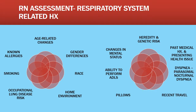For the RN assessment of the respiratory system and the patient's related history, you're going to look at age-related changes, gender differences, the patient's race, the home environment, occupational lung disease risk, smoking, known allergies, heredity and genetic risk, and past medical history of the presenting illness. Ask the patient if they have any dyspnea, if they have recently traveled, if they need more pillows than normal to breathe when they sleep. You're also going to ask the patient about their ability to perform ADLs and note any changes to their mental status.